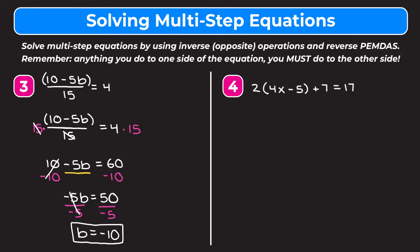Example 4 is 2 times the quantity of 4x minus 5 plus 7 equals 17. I said I'd show how to solve using the distributive property instead of just dividing out the 2, so that's what I'll do here. Reverse PEMDAS tells us to get rid of the plus 7 first, so we subtract 7 from both sides. On the left we have 2 times the quantity of 4x minus 5 equals 10. Now we distribute the 2: 2 times 4x is 8x, and 2 times negative 5 is negative 10.